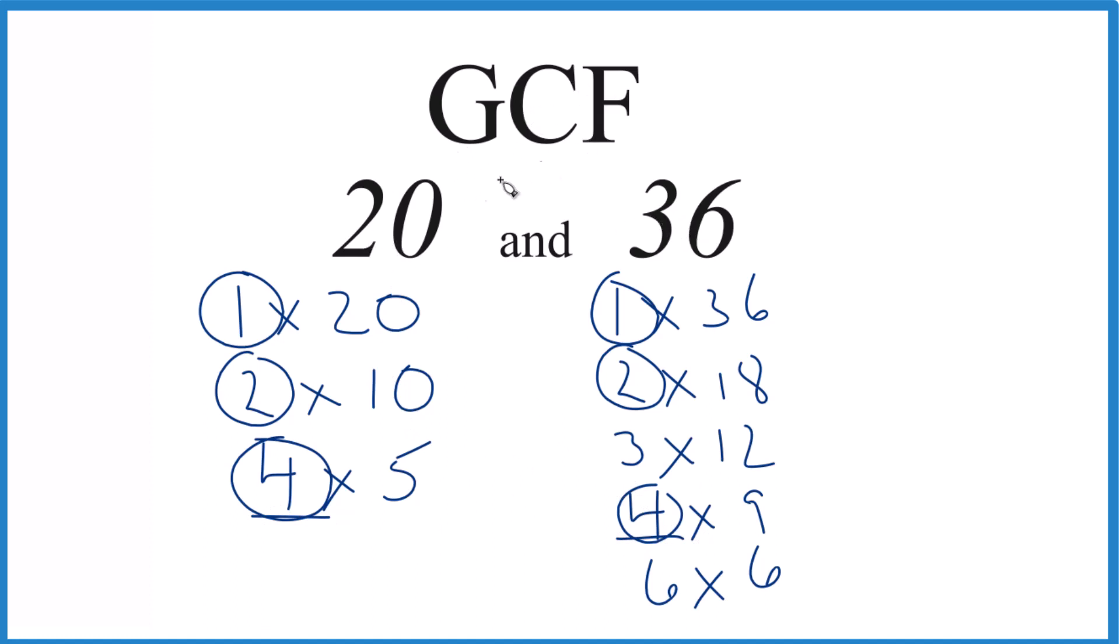So the GCF for 20 and 36 is 4. There are other ways you could do this, like prime factorization, but unless you have a really big number, this is a good way to do it. This is Dr. B. Thanks for watching.